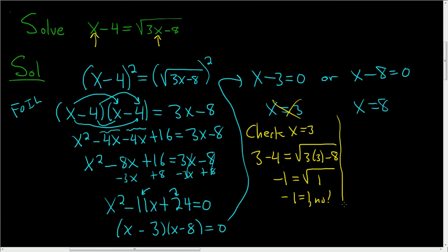Let's go ahead and check 8. So again, we're just going to replace all of these x's with 8's. So 8 minus 4 is equal to the square root of 3 times 8 minus 8.